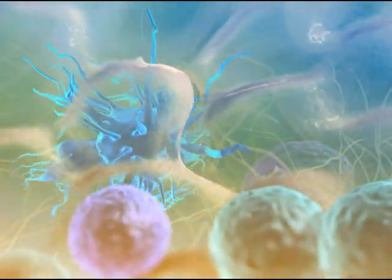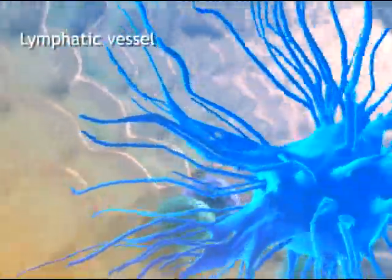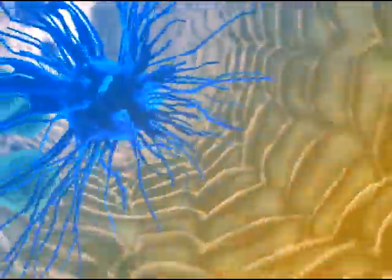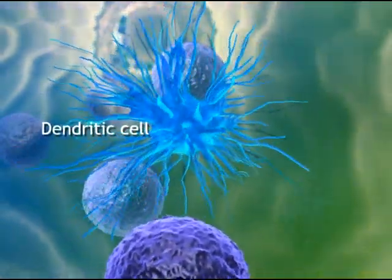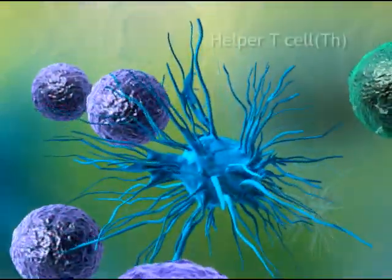The dendritic cell then enters a lymphatic vessel and travels to a nearby lymph node. Here, the dendritic cell, part of the innate defenses, encounters a helper T cell, which is part of the adaptive defenses.